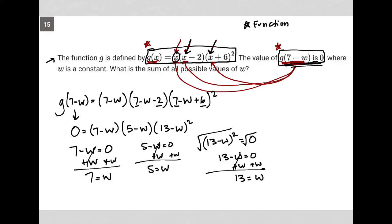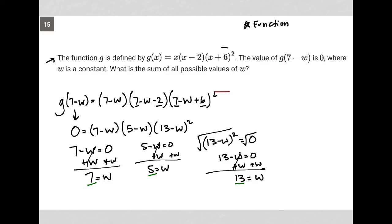So I have three answers for w: 13, 5, and 7. Let's not lose track of what the question is asking for—the question wants us to find the sum of all possible values of w.